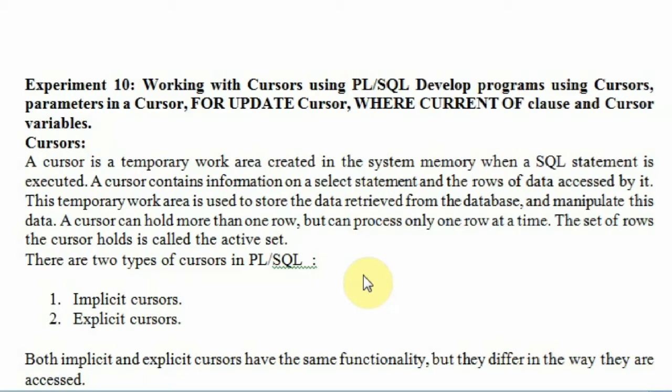The purpose of the cursor is to retrieve data one row at a time from the result set. We got a result containing sailors with rating greater than 5. On this result set you perform some operation. Cursors are used to retrieve row by row — you cannot retrieve all the rows at once; you take individual rows and do specific operations on them.